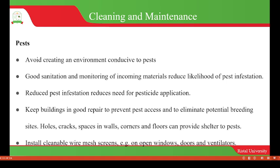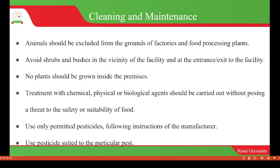Install cleanable wire mesh screens, especially on open windows, doors, and ventilation openings, to trap pests in case they attempt to enter food operation areas. Animals should be excluded from the grounds of factories and food processing plants to avoid contamination.